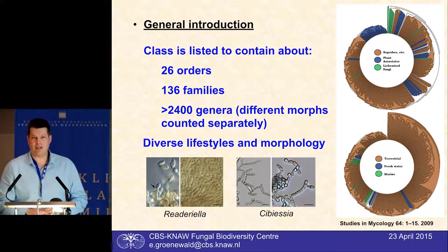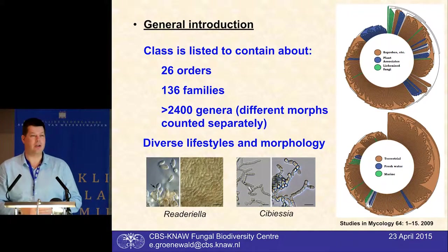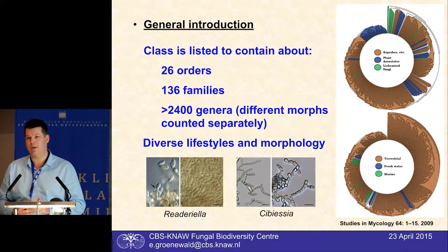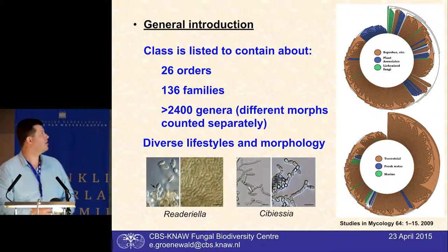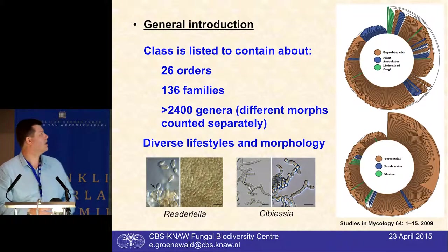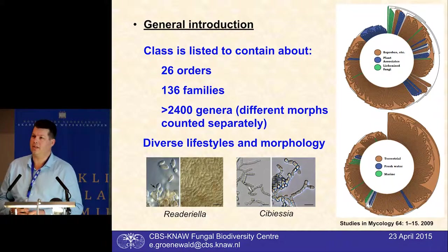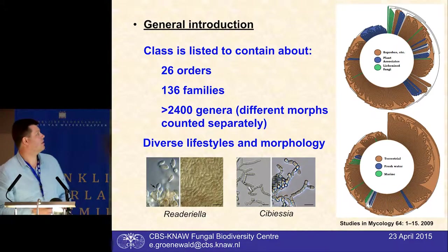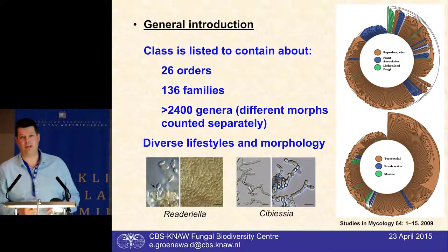As a class this is quite a big group. We have at least 26 orders currently listed in this class, about 136 families, and then more than 2,400 genera. This includes also the anamorphs and the theriamorphs or the asexuals, which are counted separately.